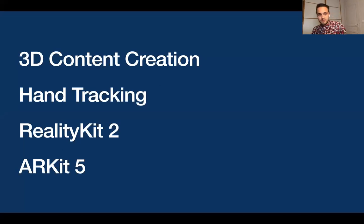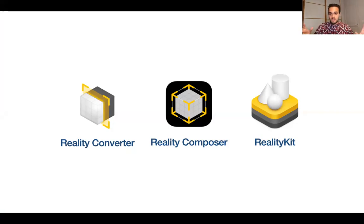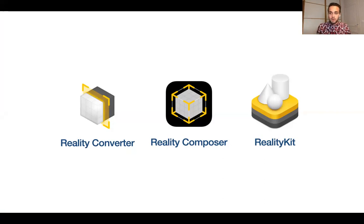My first pillar is 3D content creation. At the moment, or at least before WWDC, the three main tools developers use are: Reality Converter, to convert assets to the USDZ file format — the necessary 3D file requirement for AR on Apple platforms; Reality Composer, a scene editor where you can bring your USDZ models; and RealityKit, the framework you can use in your app to develop AR and bring scenes from Reality Composer or models from Reality Converter.